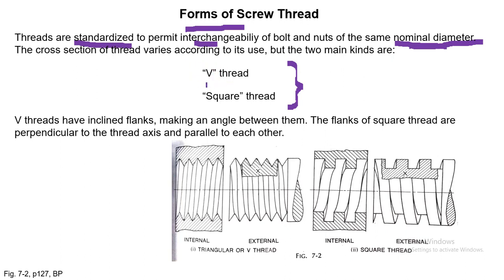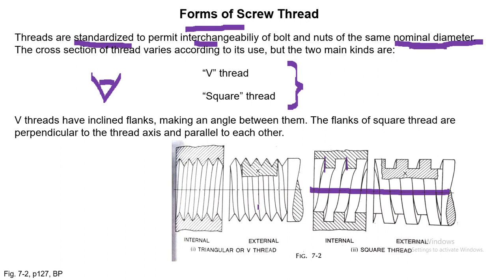V-threads have inclined flanks making an angle between them. The flanks of square threads are perpendicular to the thread axis and parallel to each other. Internal and external forms exist for both types. V-threads are more suitable for fastening as they give more resistance to motion, are stronger at the base, and can be cut easily with a tap, die, or machine. Square threads are used where greater force is to be transmitted.